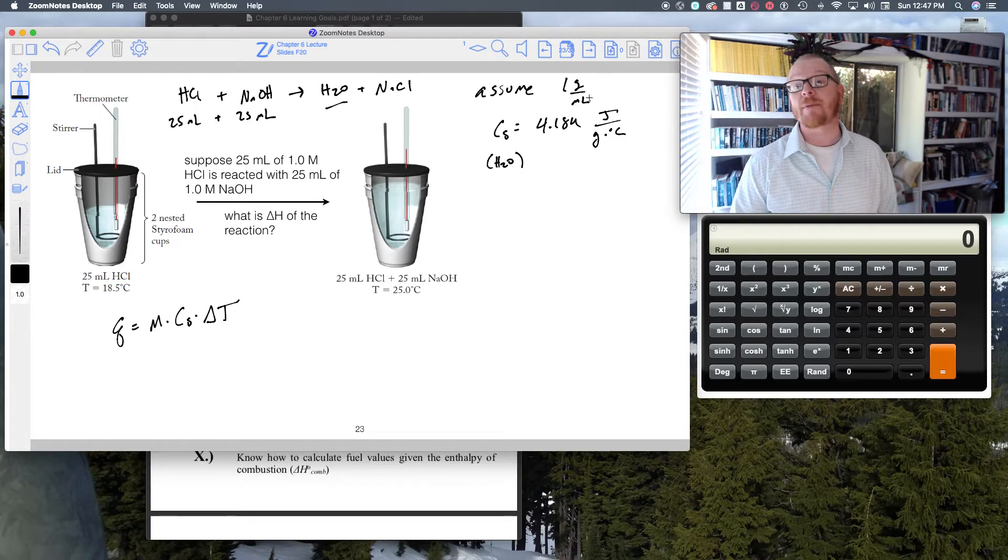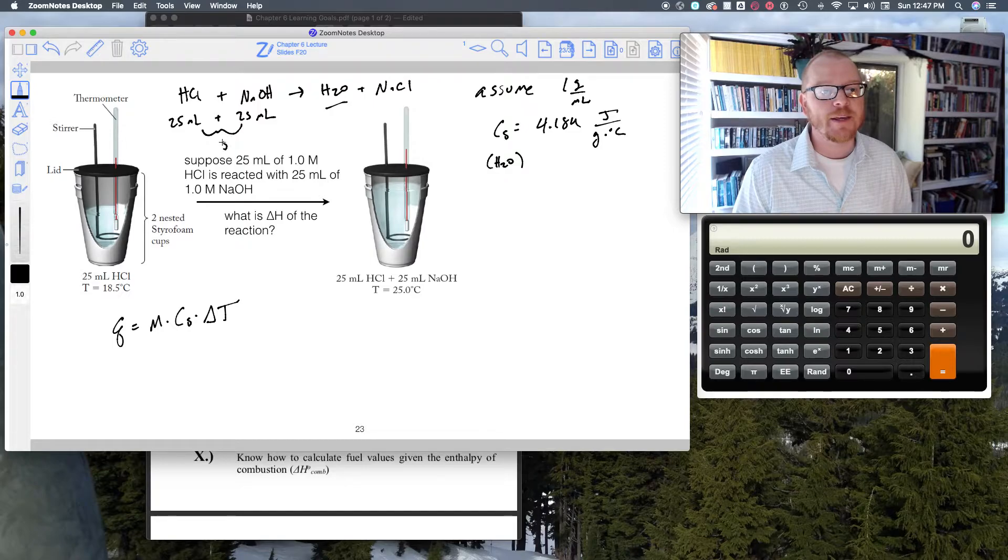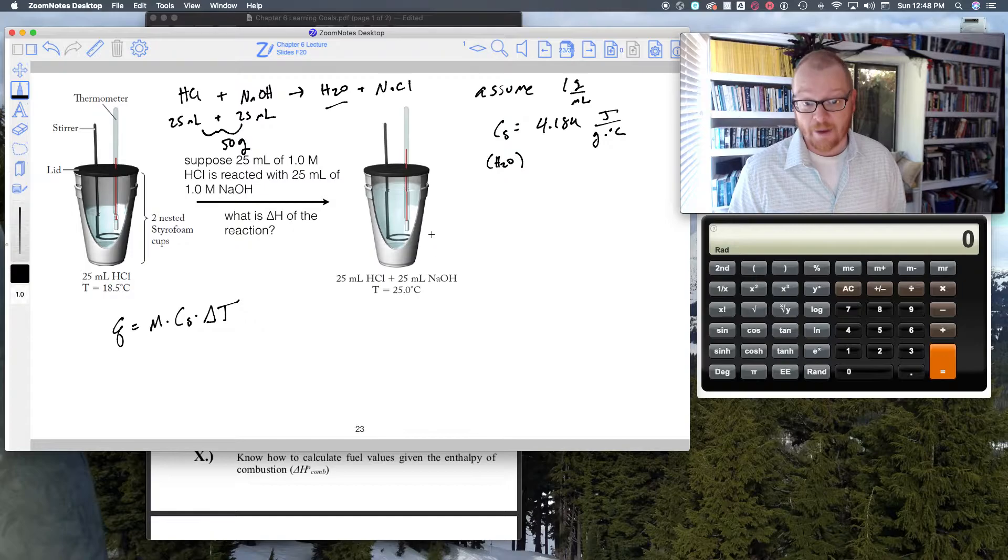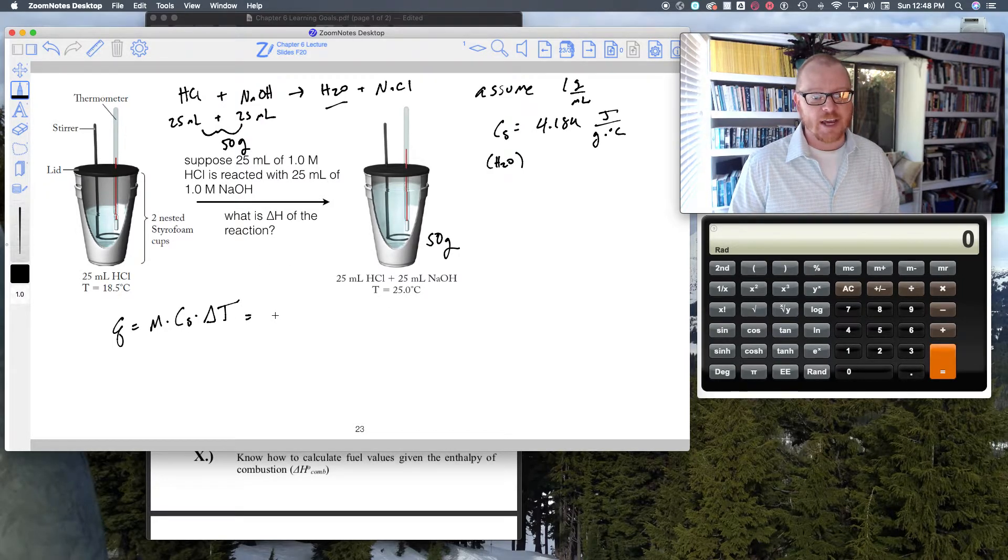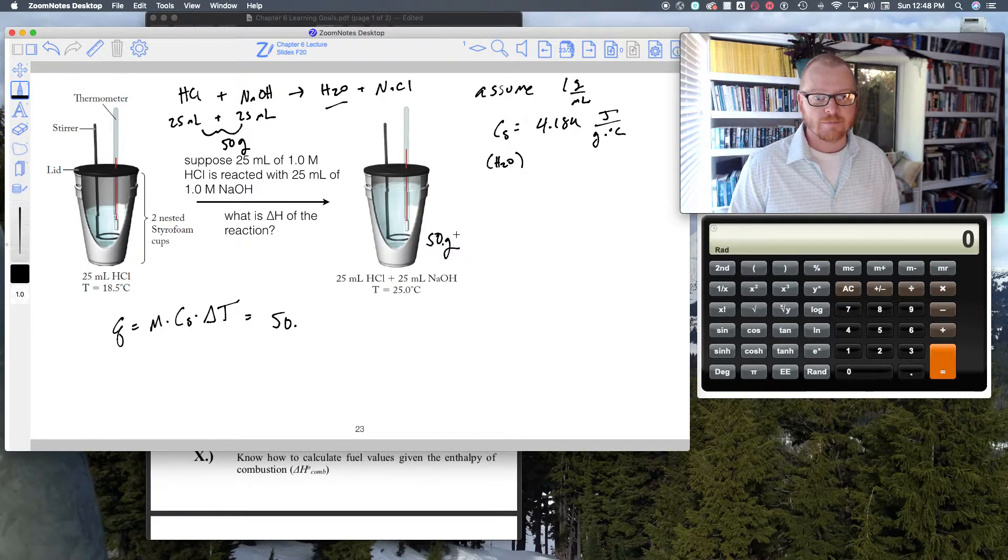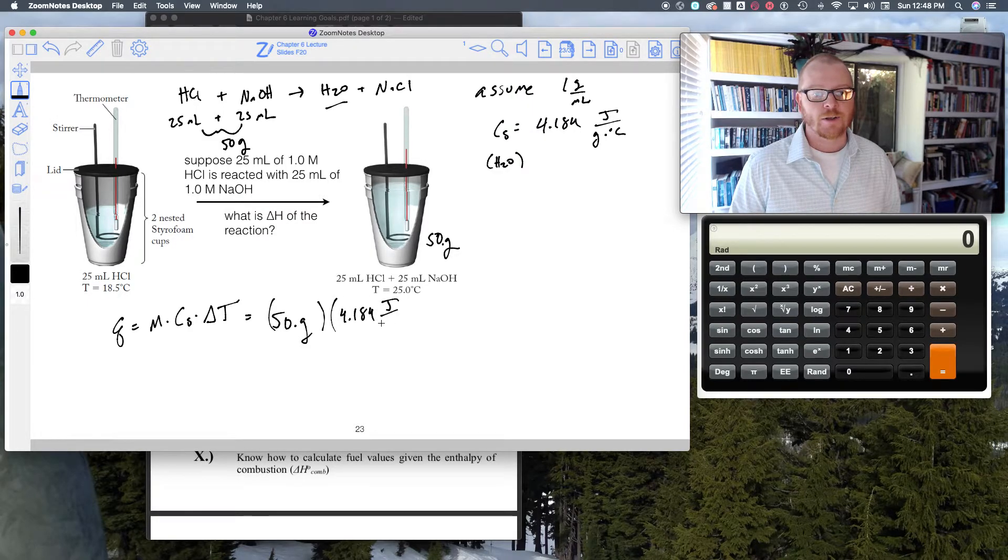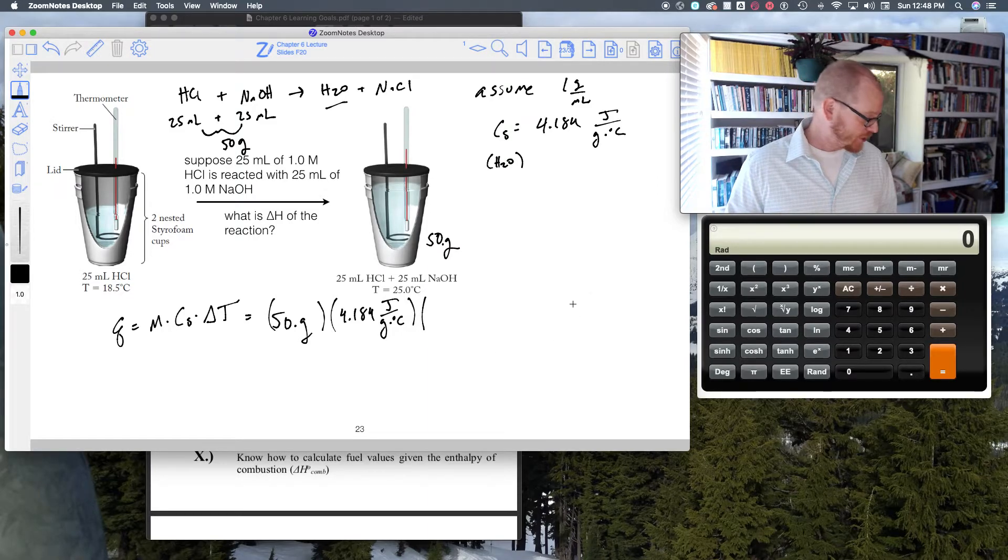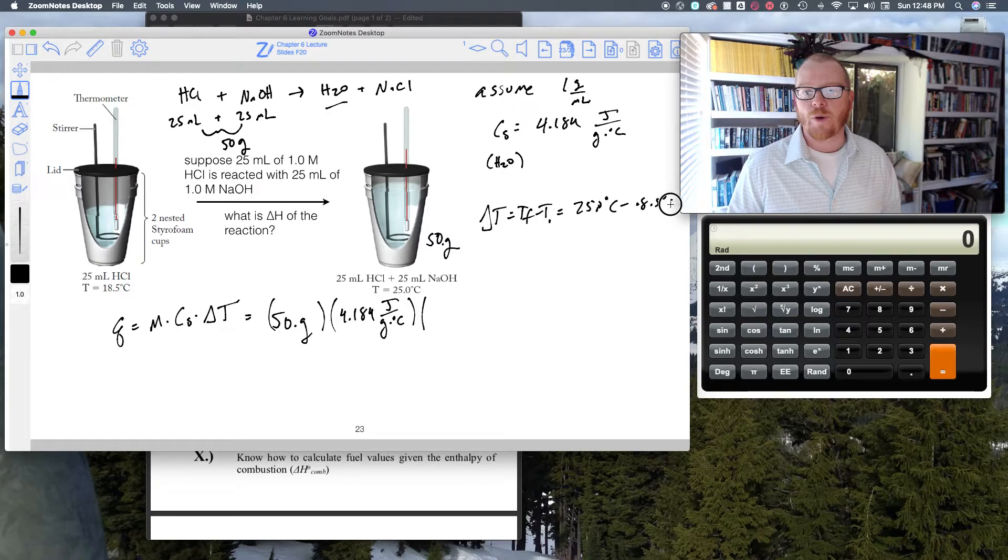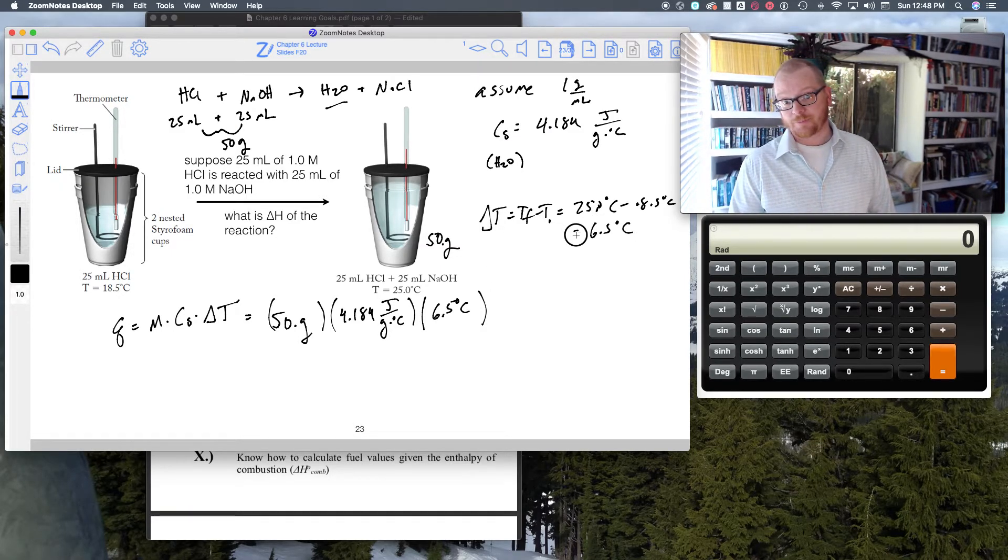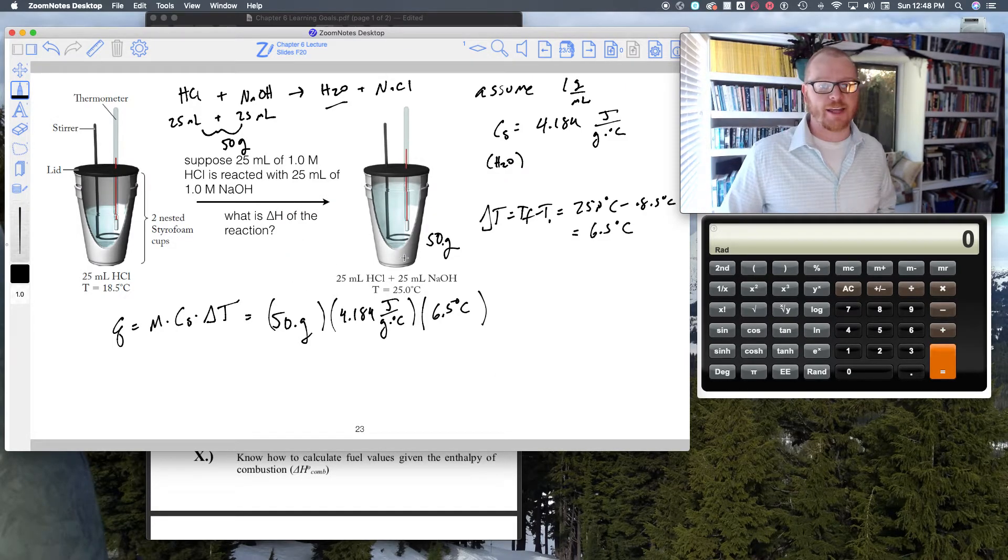We had to know that before we could even proceed to any calculation. What equation am I going to use? I'm going to use Q equals M times Cs times delta T. Because I'm doing 25 mils plus 25 mils, and I'm assuming it's one gram per milliliter, this means my reaction mixture is going to be 50 grams. Very quickly I can plug and chug. 50 grams times 4.184 joule per gram per degree C. My T final was 25.0, T initial was 18.5, quick math, that's 6.5 degrees Celsius for my change in temperature.